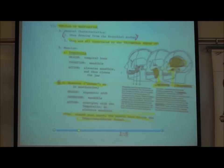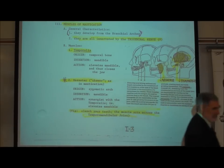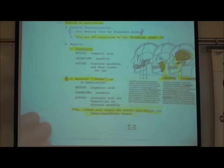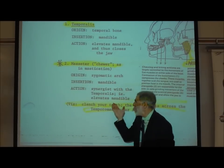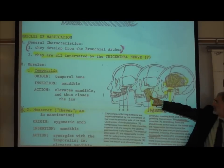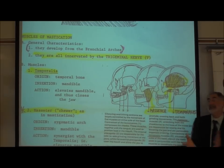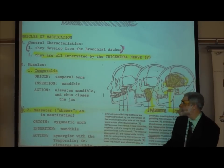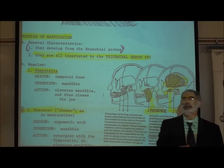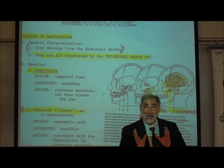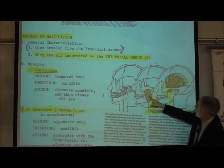We're just going to mention two of the chewing muscles: the temporalis and the masseter. The more important one is the masseter, which literally means 'the chewer.' It is the very powerful muscle for mastication. It originates on the zygomatic arch and inserts on the mandible. When it contracts and shortens, it pulls the insertion closer to the origin — this raises the mandible up, closing your mouth. It runs right over the TMJ, the temporomandibular joint.